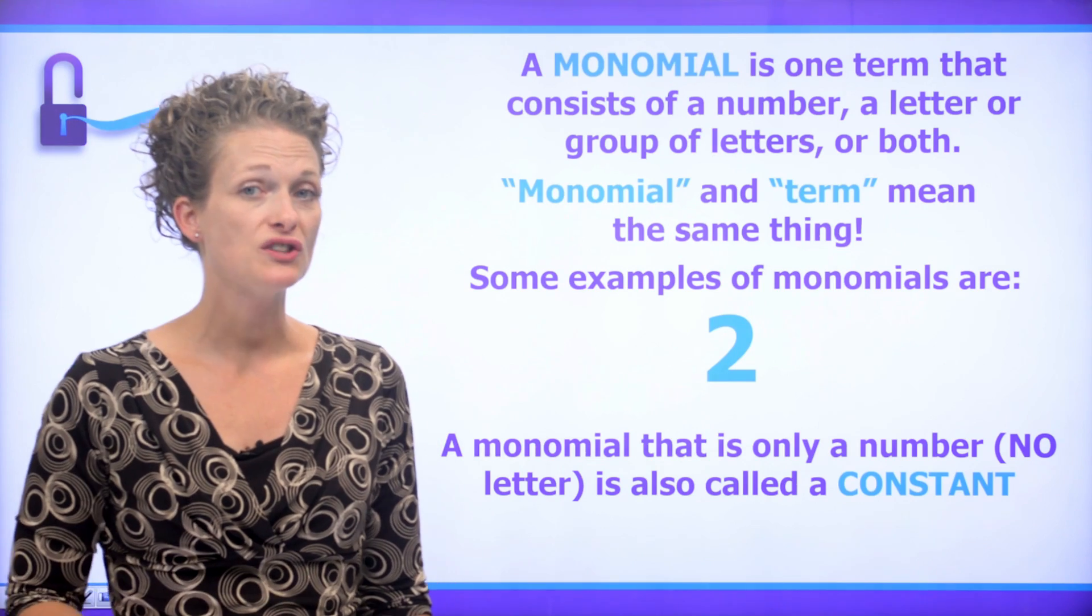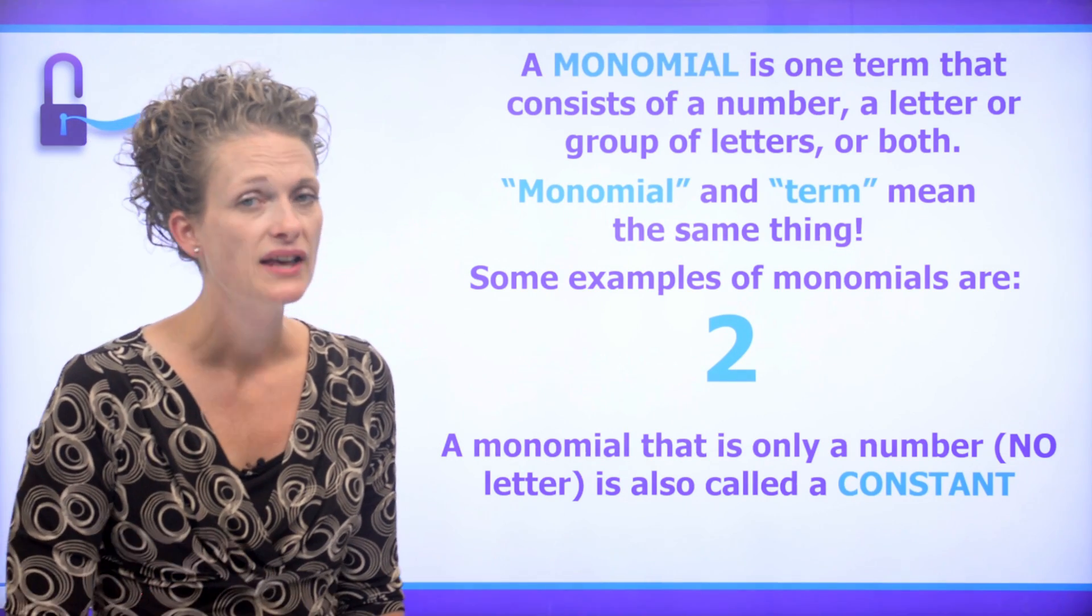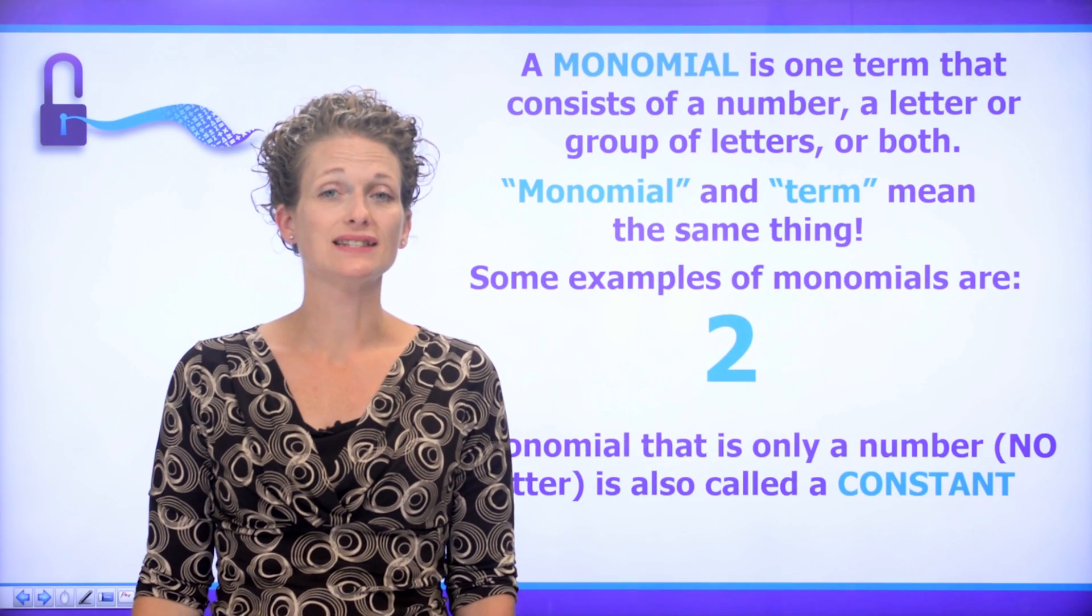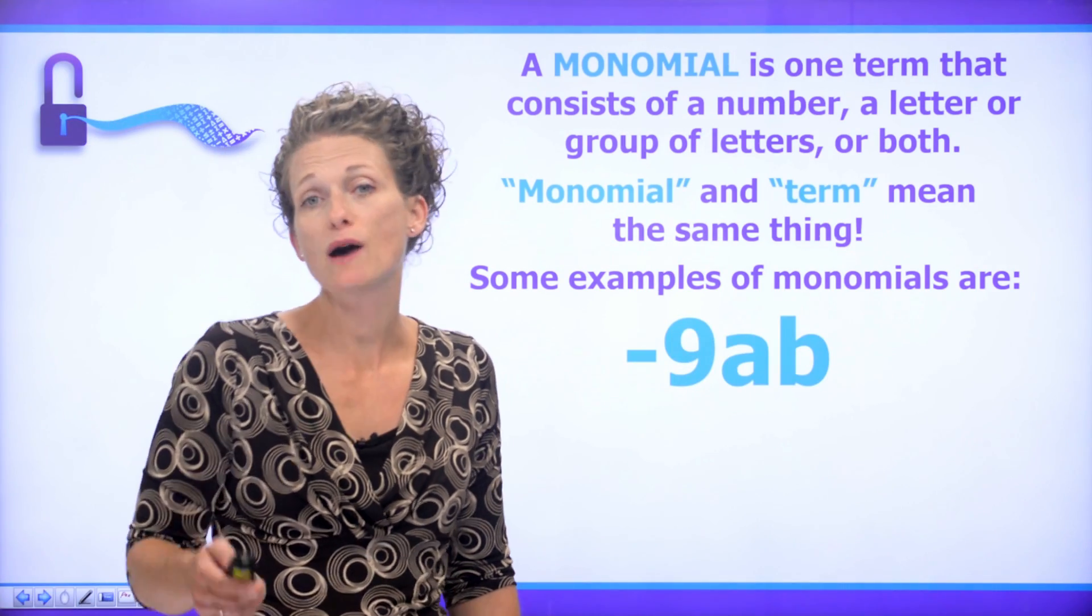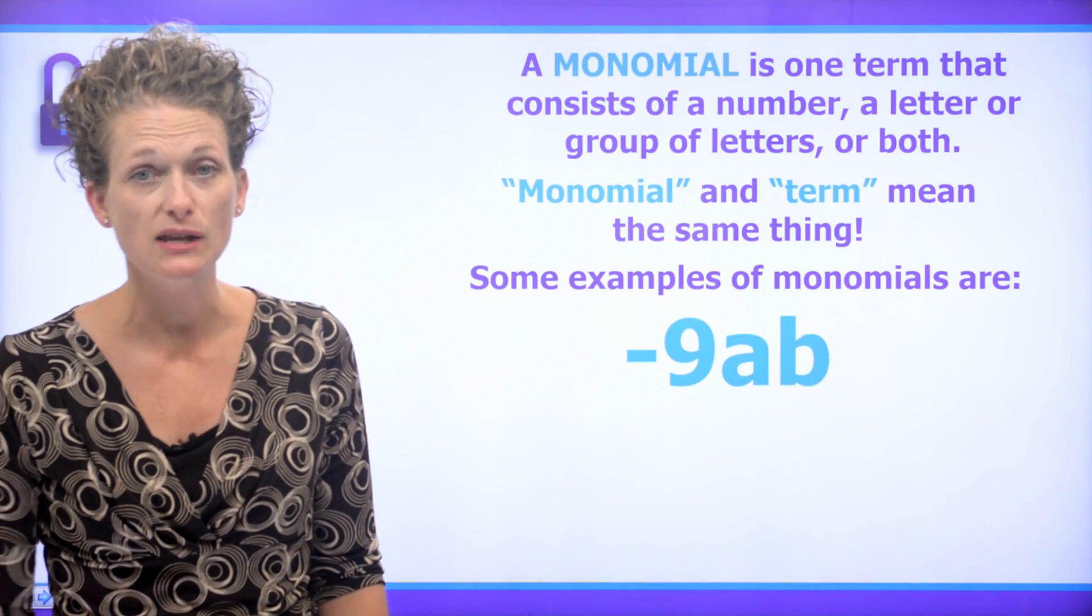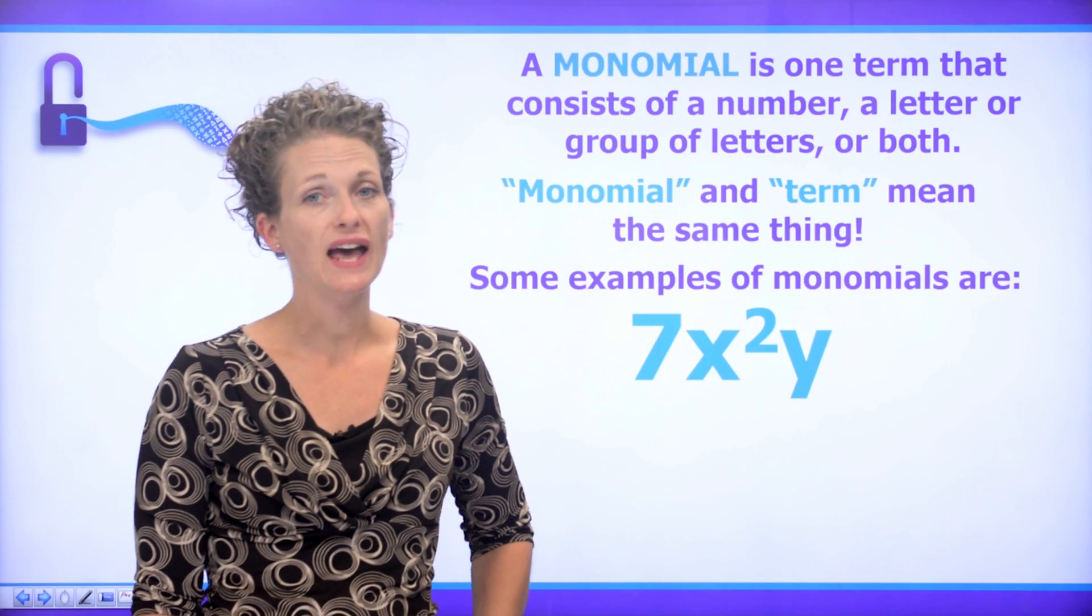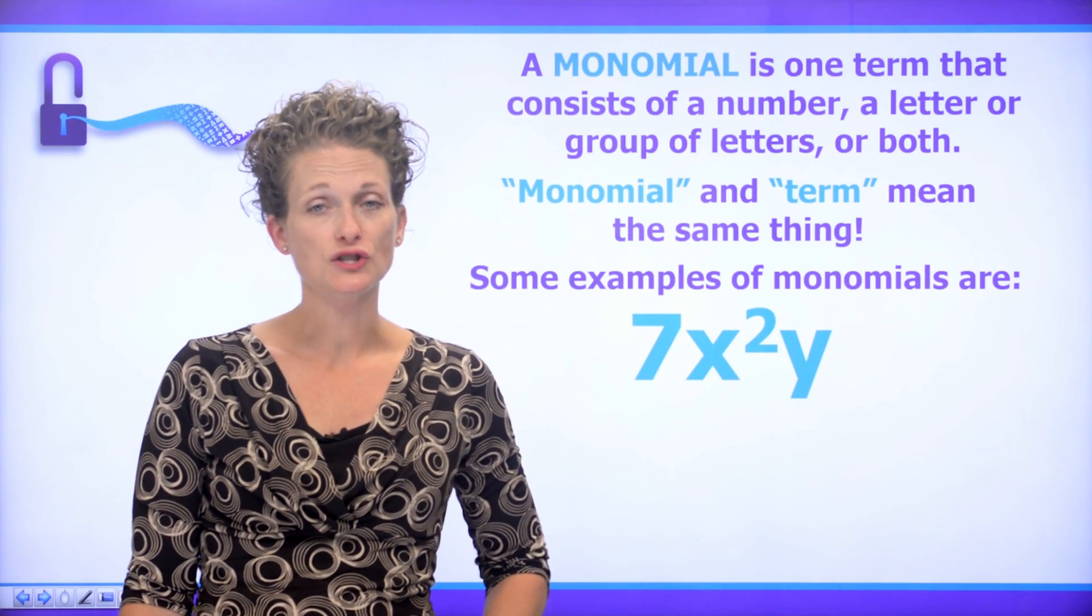Now when you see a number with no variable, no letter, that is also known as a constant. We have 3x squared. Again, this is a monomial. Or how about a negative one, like negative 9ab, or 7x squared y is also a monomial.